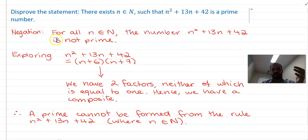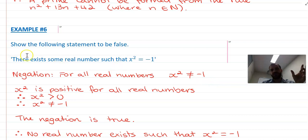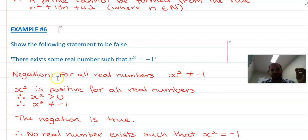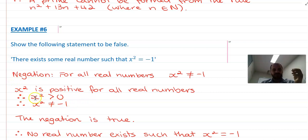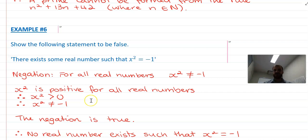They gave us a statement; we wrote the negation and then proved the negation — therefore we disproved the original statement. One final example: show the statement 'there exists a real number x such that x squared equals negative 1' to be false. Swap 'there exists' to 'for all' and write the opposite: for all real numbers, x squared is not equal to negative 1. Since x squared is positive for all real numbers — x squared is greater than 0 — x squared cannot equal negative 1. The negation is true, so the original statement is disproved. That's disproving statements, and you've also learned about the quantifiers 'for all' and 'there exists'.